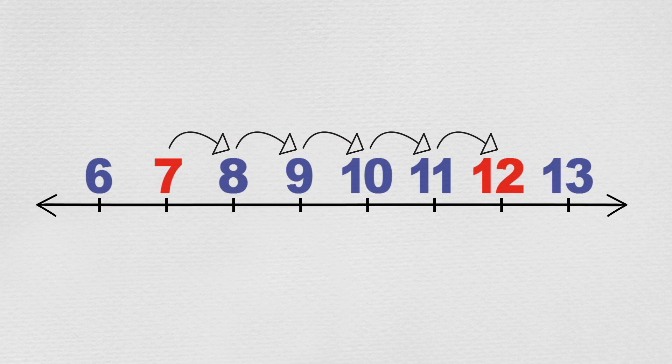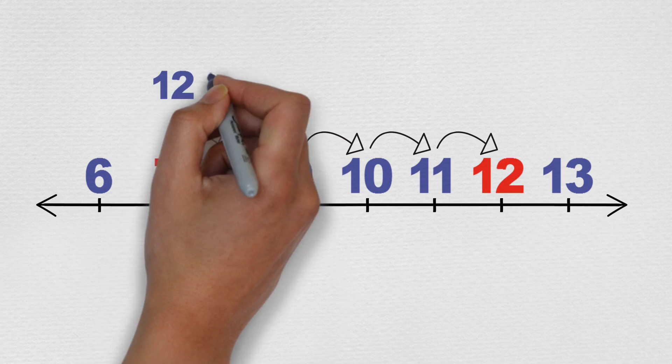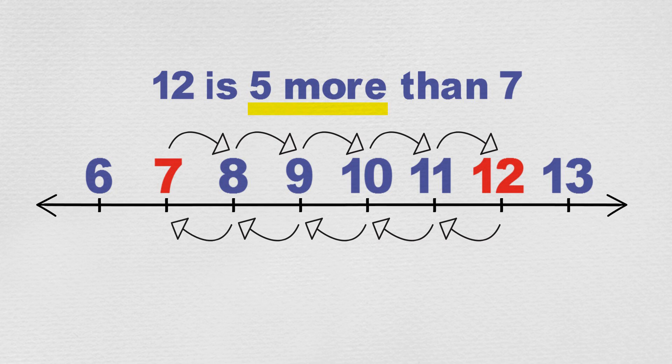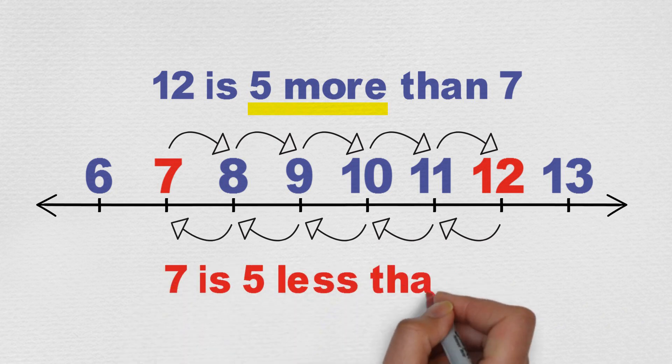In other words, 12 is 5 more than 7. If you look at it from the other direction, that is moving backwards or to the left from 12, then you can say that 7 is 5 less than 12.